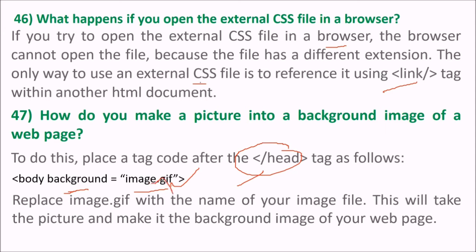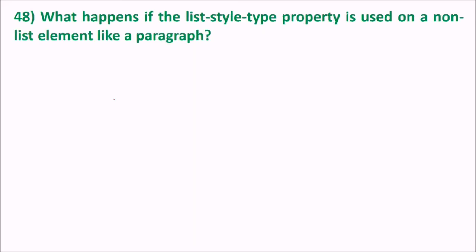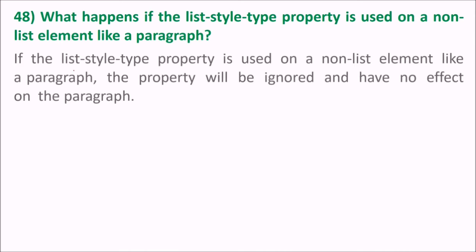What happens if the list-type property is used on a non-list element like a paragraph? If the list-type property is used on a non-list element like a paragraph, the property will be ignored and has no effect on the paragraph.